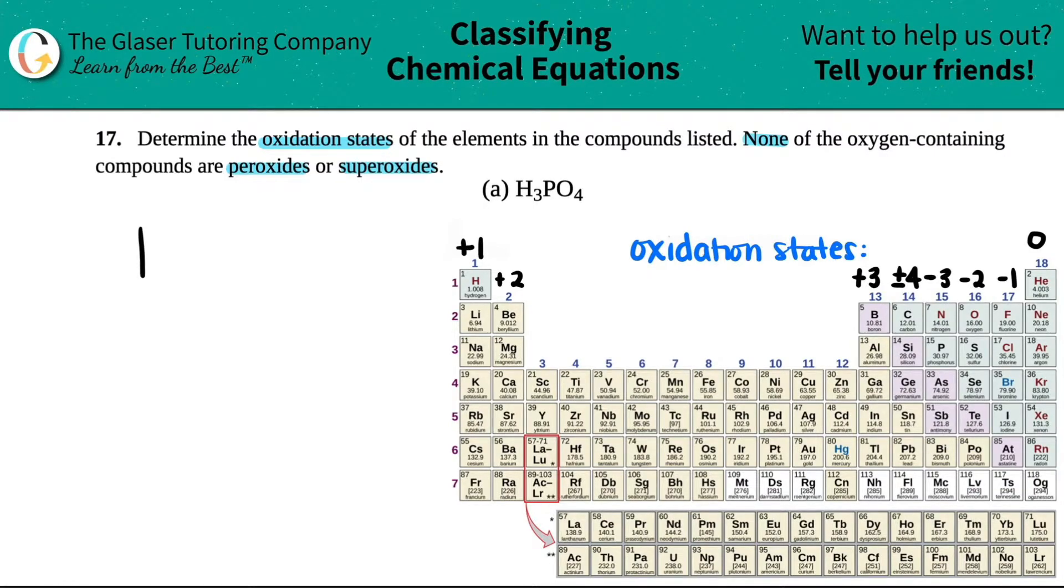So I'm just going to rewrite this, H3PO4. So when we have to find the oxidation states, just know that the oxidation states are charges, right? We've been seeing charges all throughout this course, right? The charges are always in the upper right-hand corner, right? Of an element. And we use those charges, or the oxidation states, to crisscross to find the compound, right?